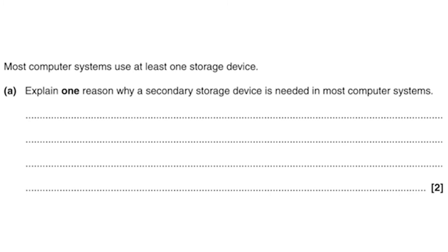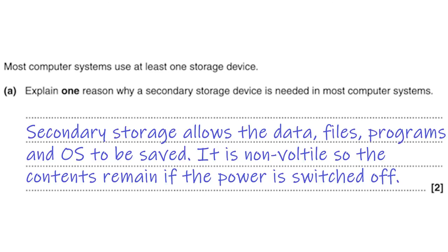Finally, let's have a look at this exam question: 'Most computer systems use at least one storage device. Explain one reason why a storage device is needed in most computer systems.' Two marks. To start off, as always, use the correct definition: secondary storage allows the files, data, programs and operating system to be saved. You then need to explain why it needs to do that. The main reason is because it's non-volatile, which means that even when the power is switched off all of the contents would remain. It would be pretty annoying if every single time you turned your computer off everything got deleted.